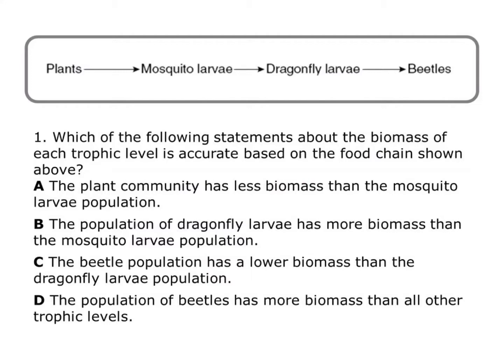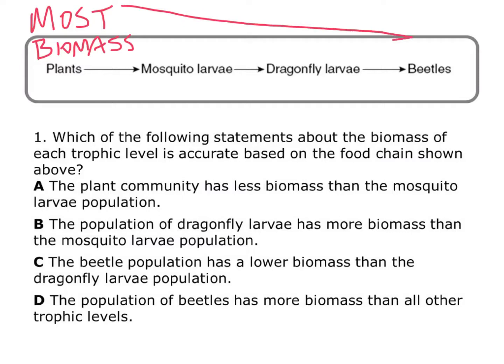Looking at a practice problem: which of the following statements about the biomass of each trophic level is accurate based on the food chain shown above? We want to remember that the producers have the most biomass, and that gets reduced all the way down the food chain until you get to the end, where that population has the least biomass. As long as you understand that concept, we just have to think about each statement.